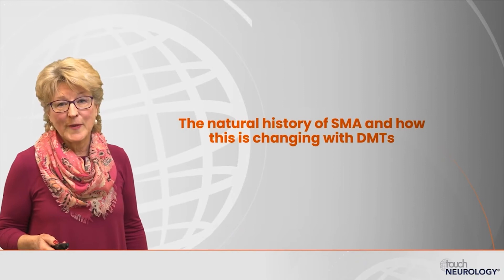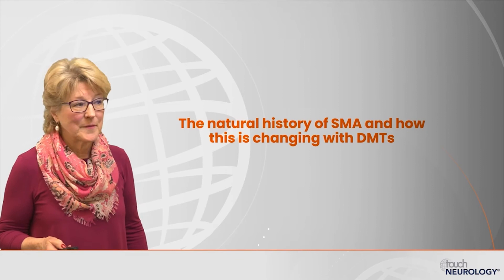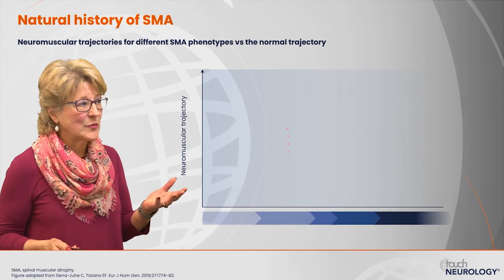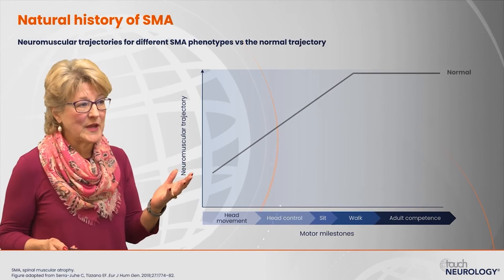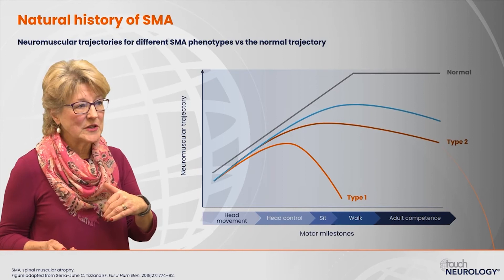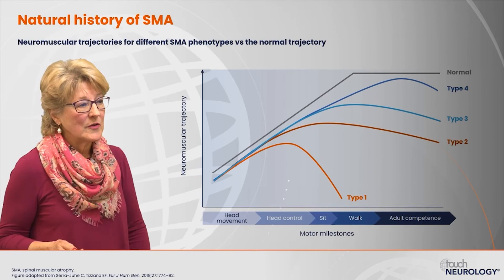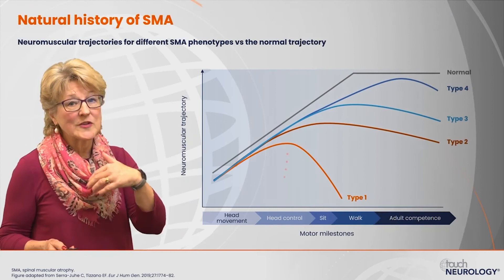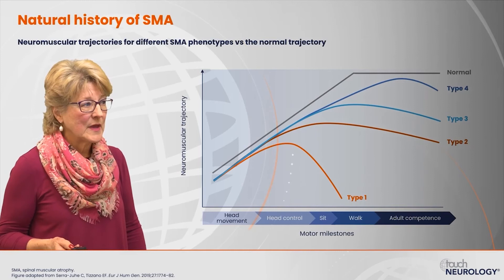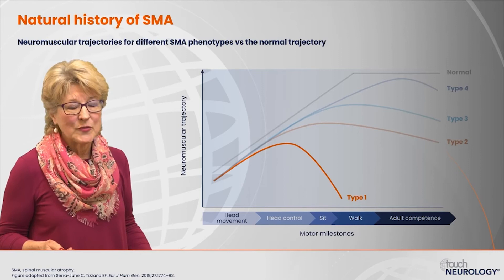We'll talk about the natural history of spinal muscular atrophy and how this is changing with disease-modifying therapies. The natural history of SMA has different trajectories depending on the phenotype of the patient. In type 1 patients there is a very rapid decline of function, whereas type 4 patients have a slower decline in function. But keep in mind that the trajectory is always loss of motor function and loss of strength over time, and in type 1 patients this disease progression happens much more quickly than in other phenotypes.